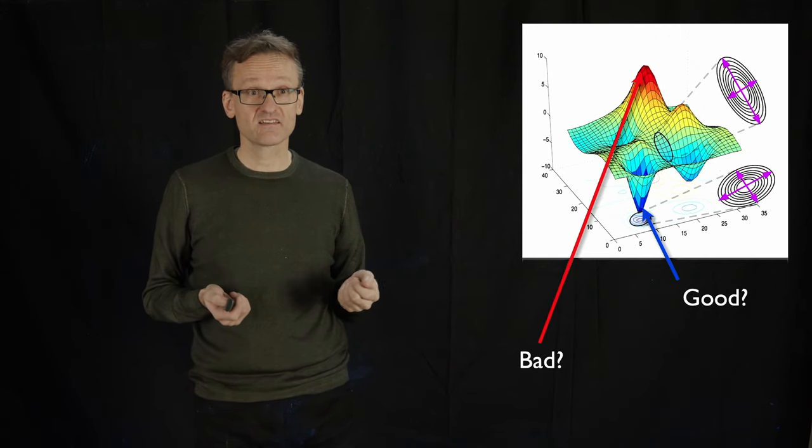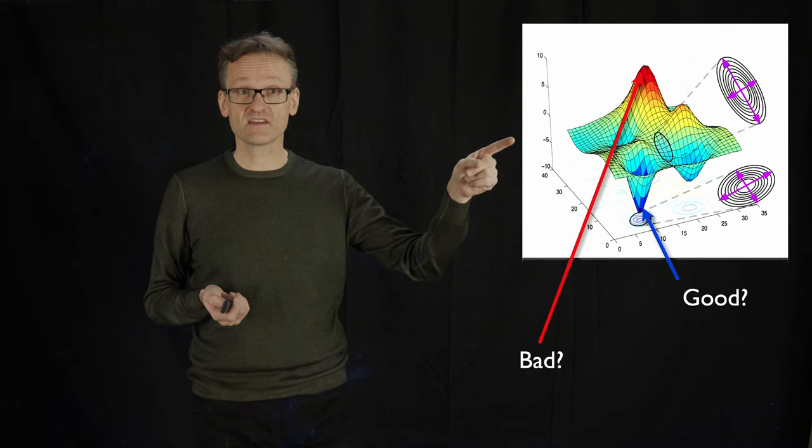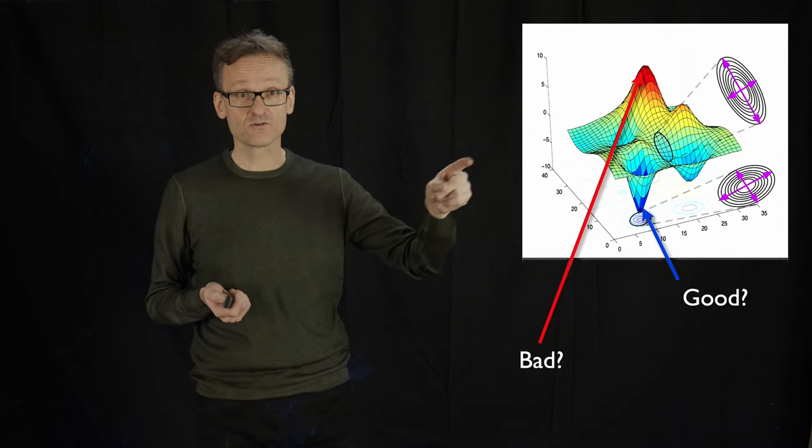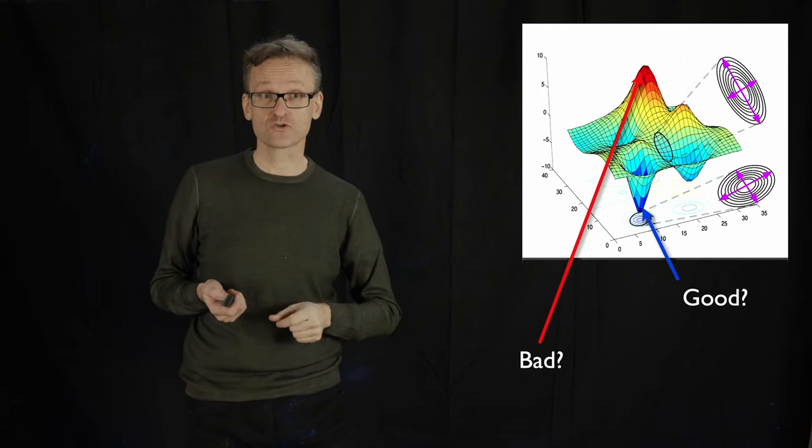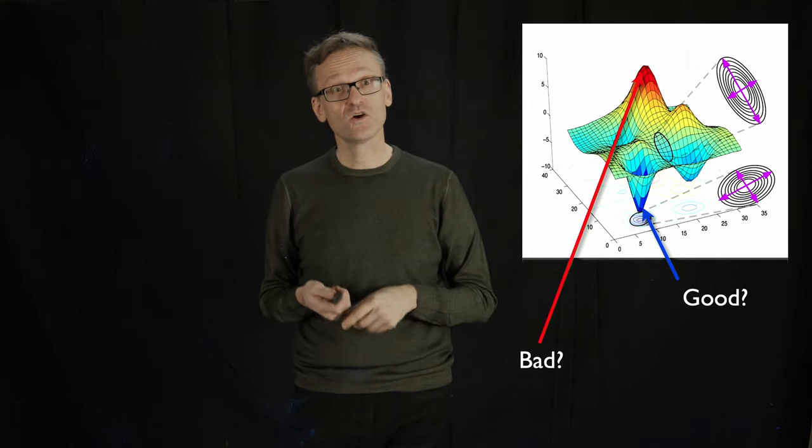But how bad is bad? If that red peak was half that height, would that still be horribly bad? Or is it somewhat bad? And is that blue astronomically good or just a little bit good? We don't know.